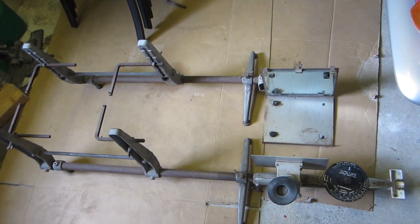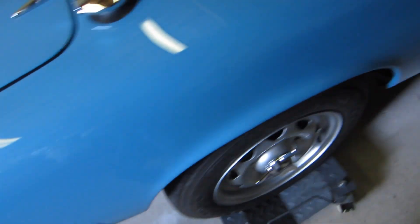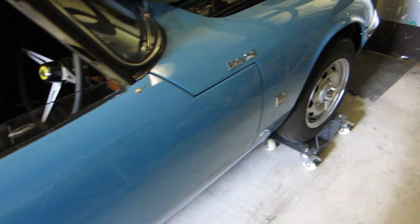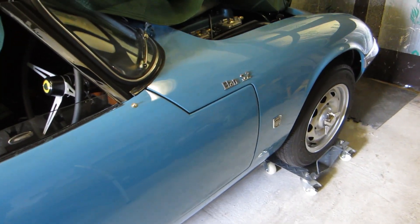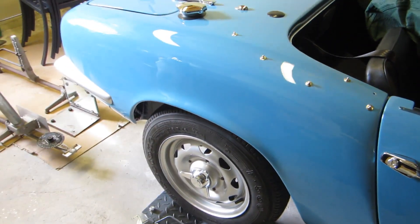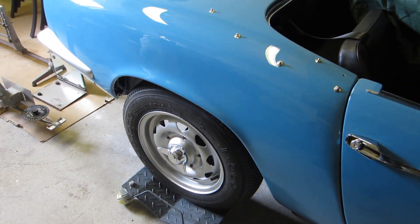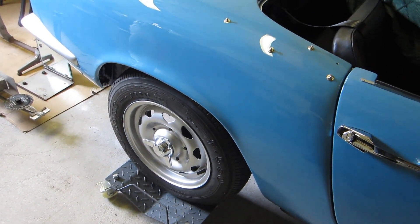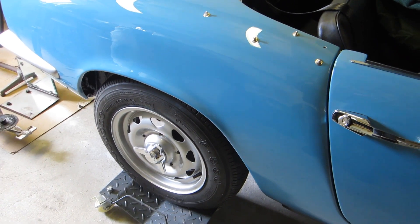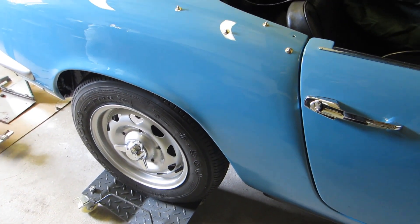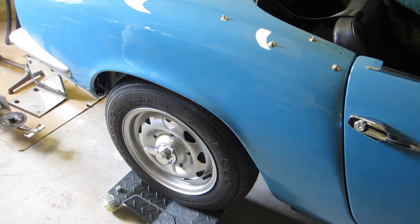Now these are tracking gauges that Neil's very kindly lent me, and I've used them to check the tracking on the front, which is pretty easy to set up and adjust. And I've also used them to check the tracking on the back, which is a different kettle of fish because there's no adjustment, but nonetheless it needs to be correct. If it's not correct, then it can really upset the handling.